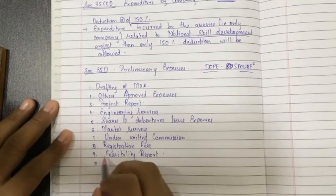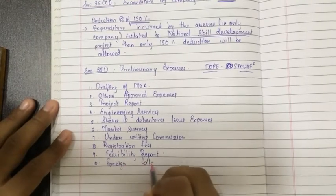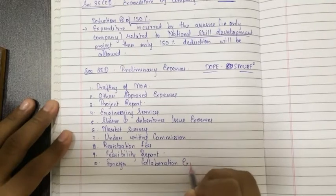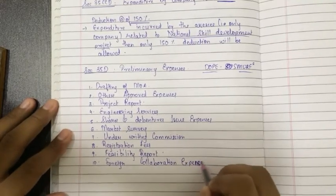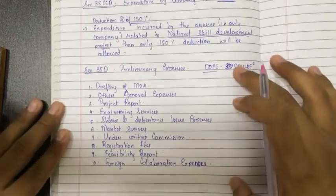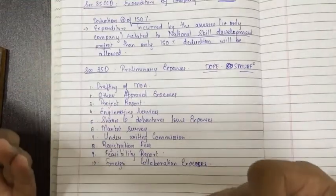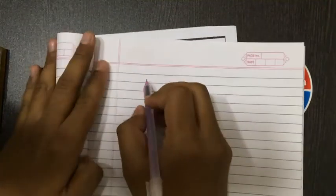The tenth stands for foreign collaboration expenses. Sorry, my expenses spelling is wrong - expenses. So this many expenses will be allowed. There is an additional condition for this that I am writing over here. Deduction will be allowed in this manner.